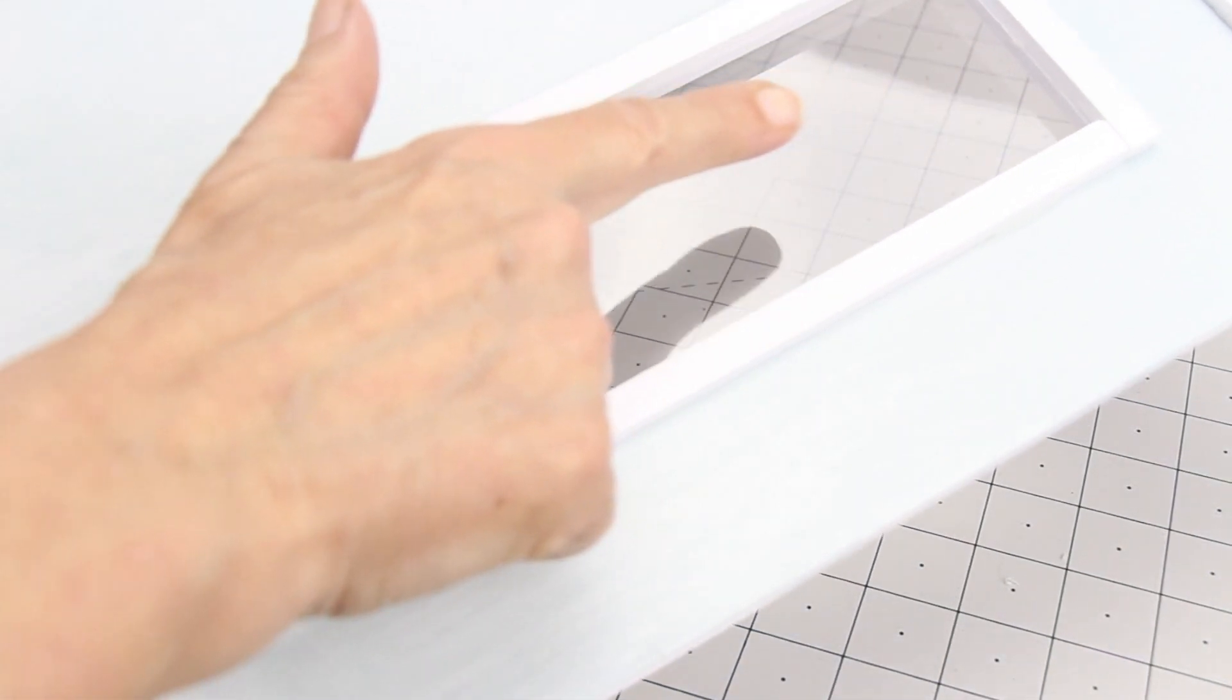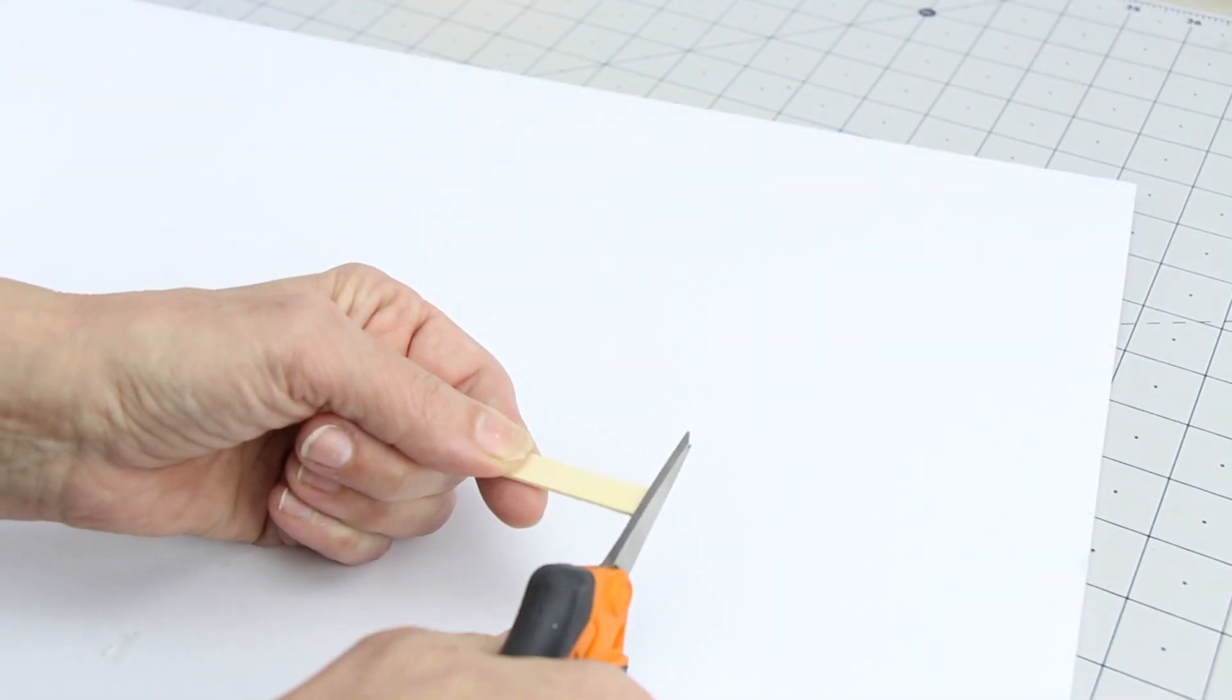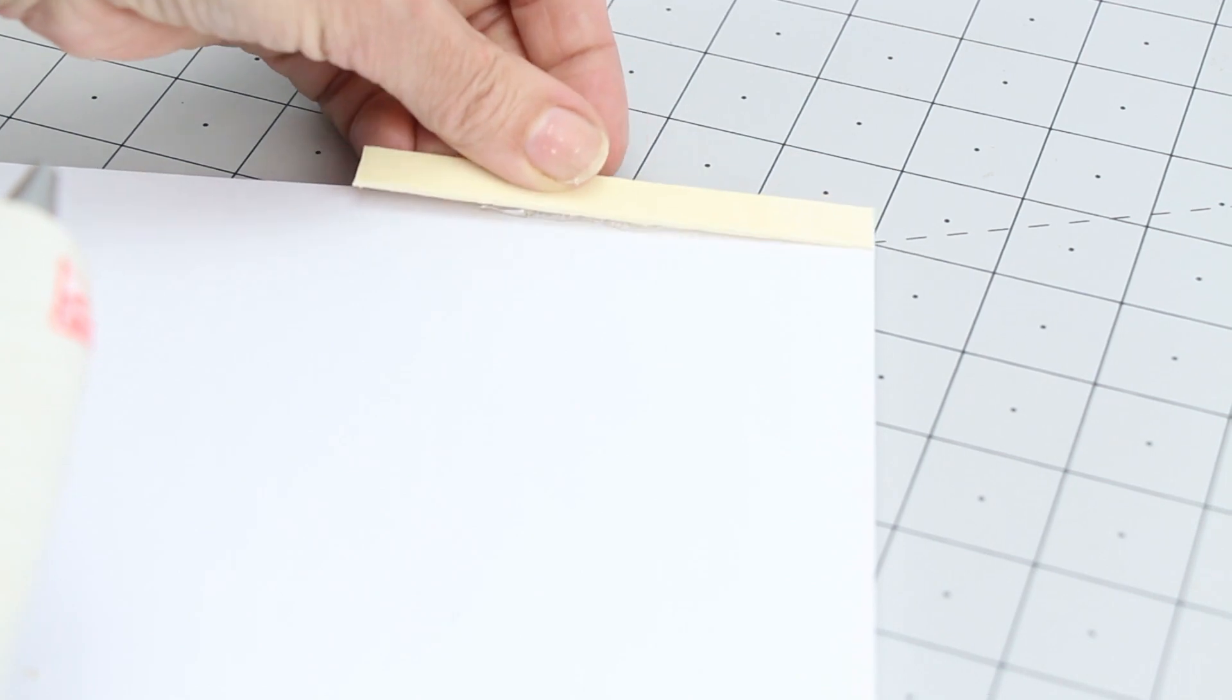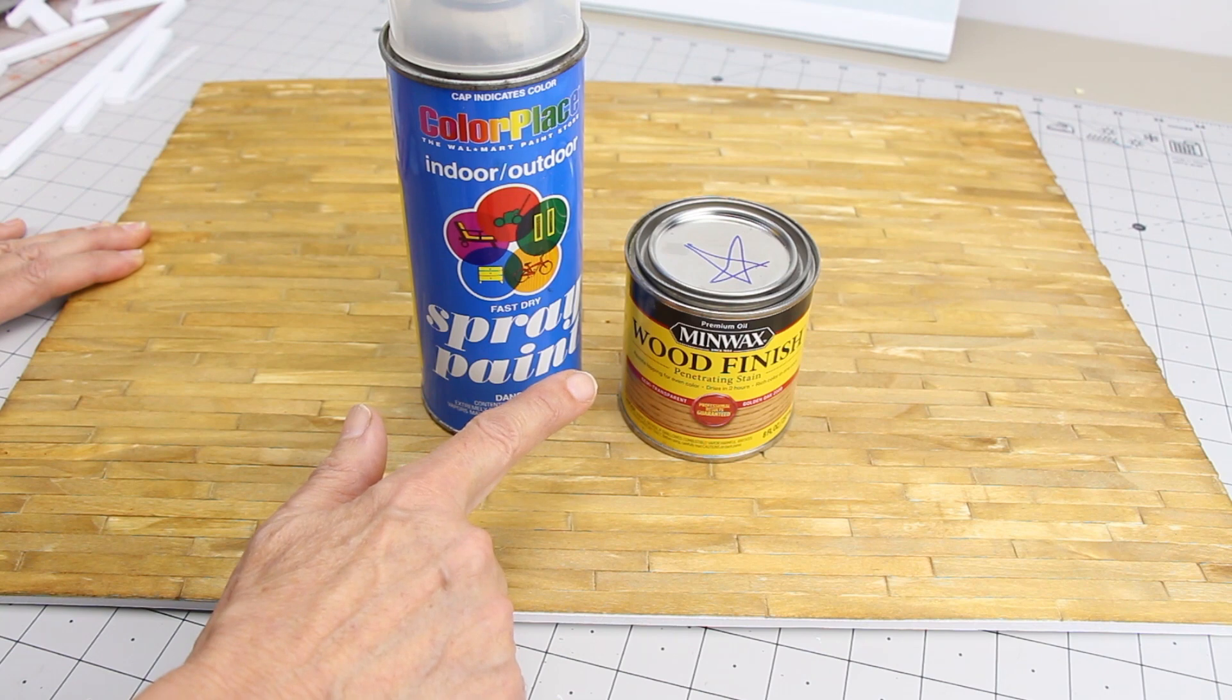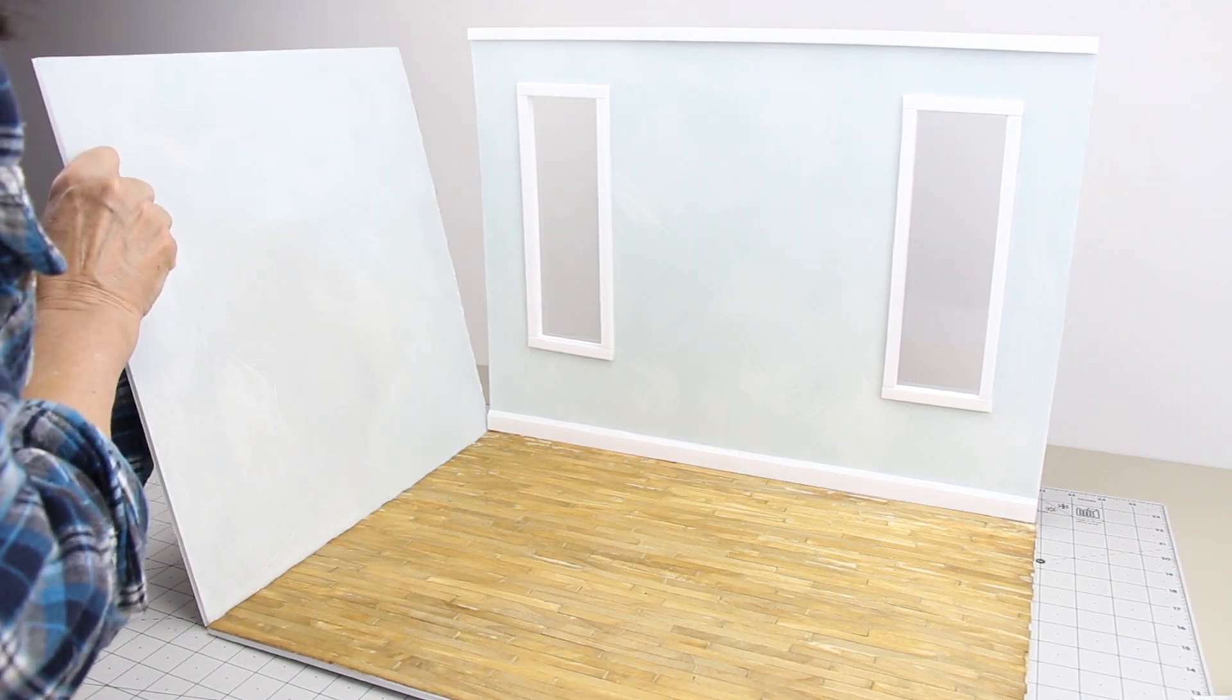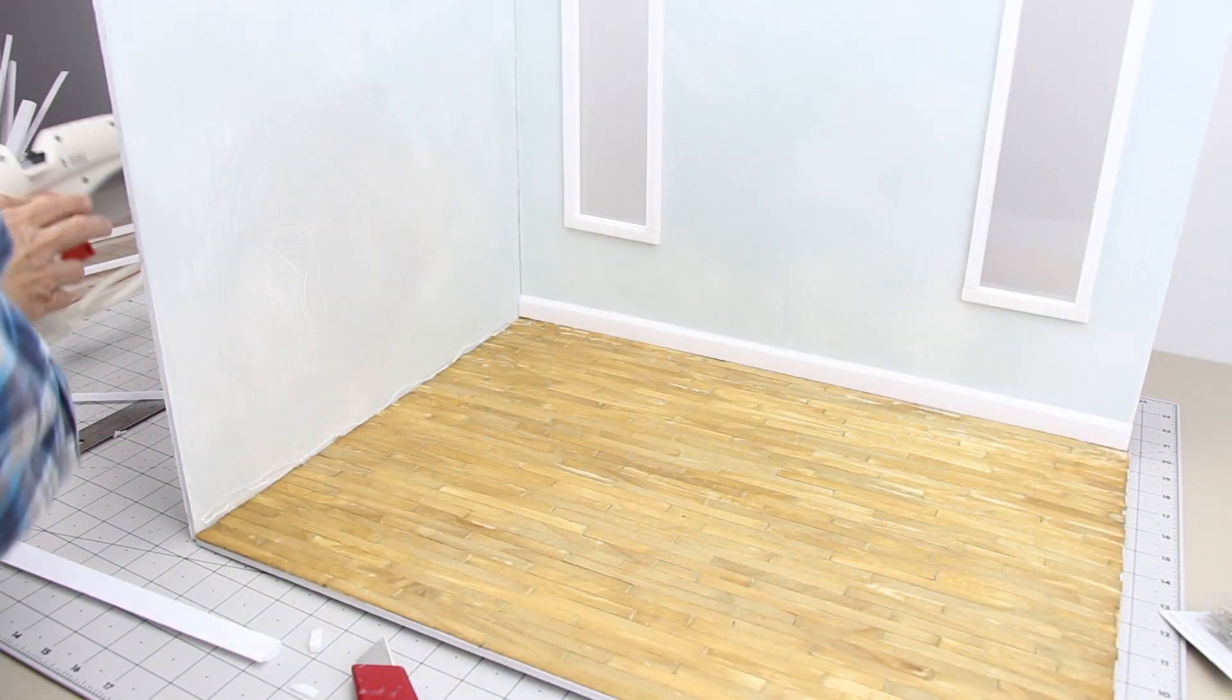I recycle a Barbie doll box for window panes. Take craft sticks from the dollar store and trim off the ends and hot glue them on your floor. I use penetrating stain to stain the floor and sprayed it with a clear coat for the finish. Then glue the room together and then glue in the trim.